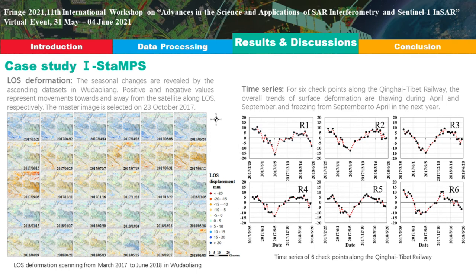The deformation results for Case Study 1 revealed significant signal changes of permafrost in a freeze-thaw cycle. Six PS points along the Qinghai-Tibet Railway are selected, and the overall trends show thawing during April to September and freezing from September to April of the following year.